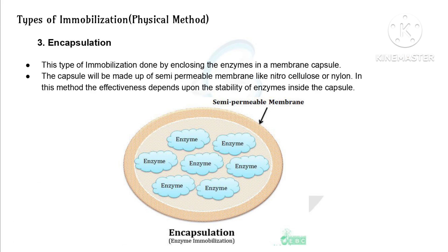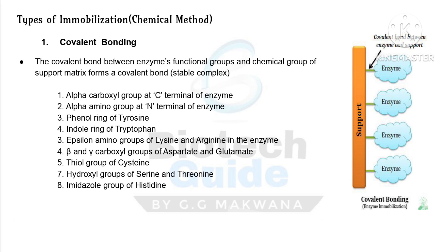Now the second type — chemical immobilization. First, covalent bonding: a covalent bond is formed between an enzyme functional group and a chemical group of the support matrix. The functional groups of the enzyme involved in covalent bonding include: the alpha-carboxyl group of the C-terminal, the alpha-amino group of the N-terminal, the phenol ring of tyrosine, the indole ring of tryptophan, epsilon-amino groups of lysine and arginine, the beta and gamma carboxyl groups of aspartate and glutamate, the thiol group of cysteine, the hydroxyl groups of serine and threonine, and the imidazole group of histidine.